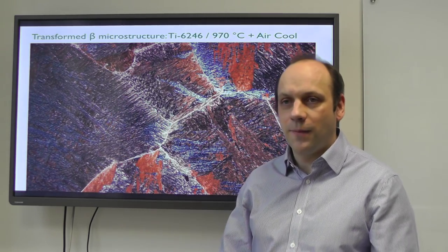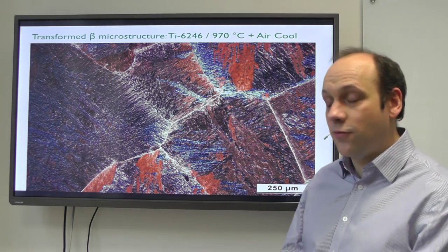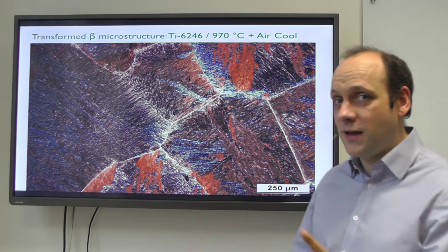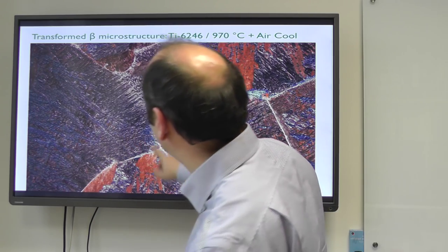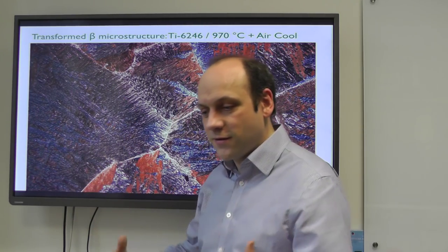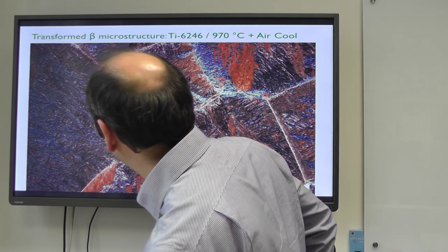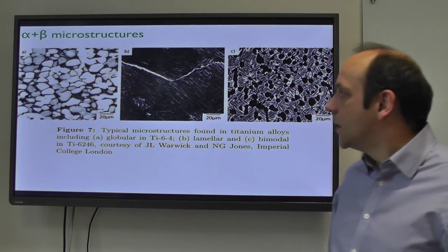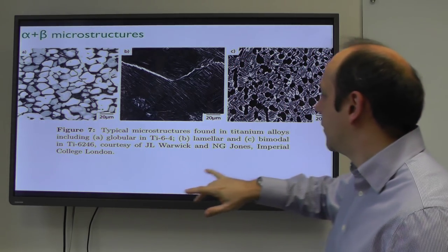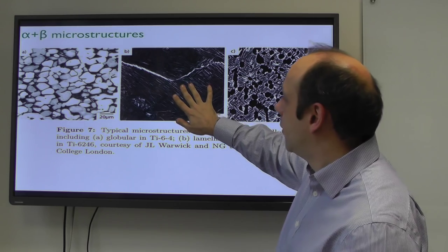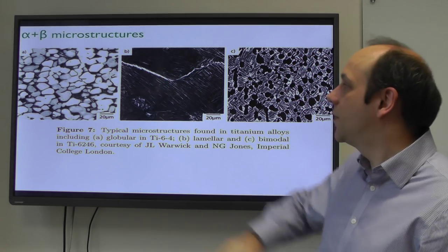The colony microstructure tends to give poor fatigue properties in certain circumstances - it can be very tough because of the interface toughening, but it will tend to give poor fatigue properties. So what you tend to want to do is break down the long plates into smaller alpha grains. This lamellar or colony alpha microstructure is also called Widmanstätten alpha - all these terms mean the same thing.